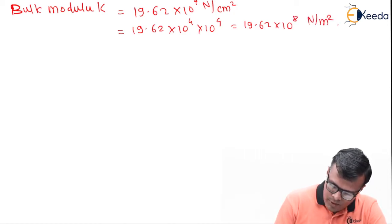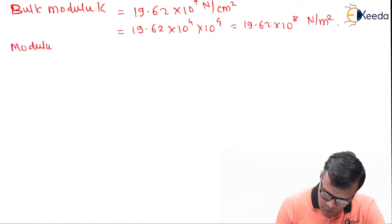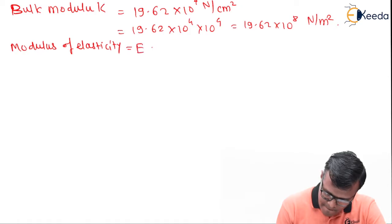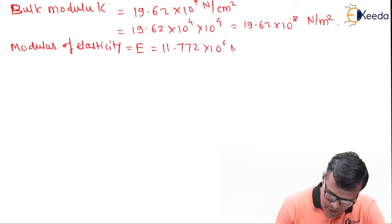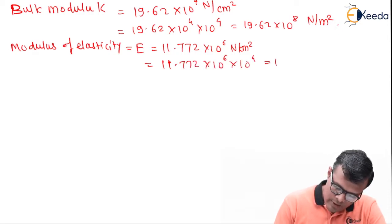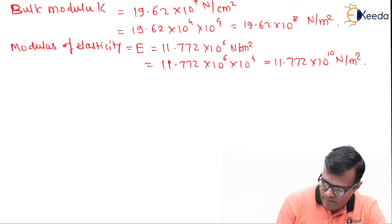Another value, that is modulus of elasticity or Young's modulus, E is equal to 11.772 × 10^6 Newton per meter square. So it will become 11.772 × 10^6 × 10^4, that is equal to 11.772 × 10^10 Newton per meter square.